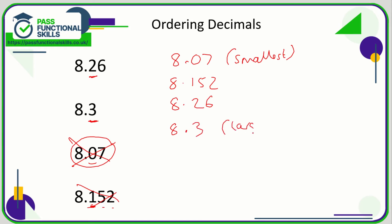If you find it confusing when you're dealing with numbers which have different numbers of decimal places, what you can do is simply—if we're comparing 8.26, 8.3, 8.07, and 8.152—we can just add zeros so that they are now all the same length. For some people, that makes it a little bit easier.